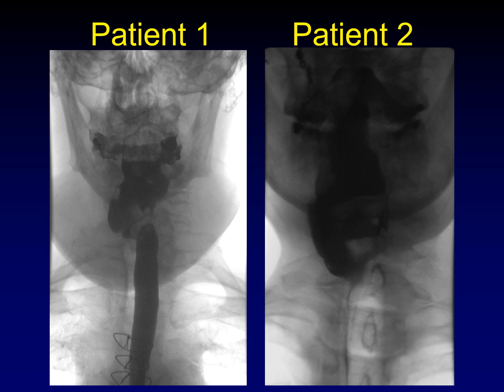These two swallows look the same — I could switch them and you'd have to come to the same conclusions. The two ways that you can get asymmetric utilization is you can have too much flow on one side, or you can have too little flow on the other side.